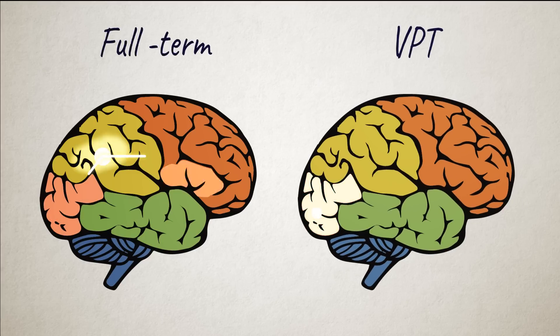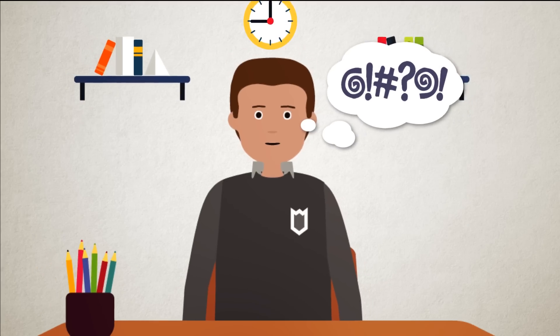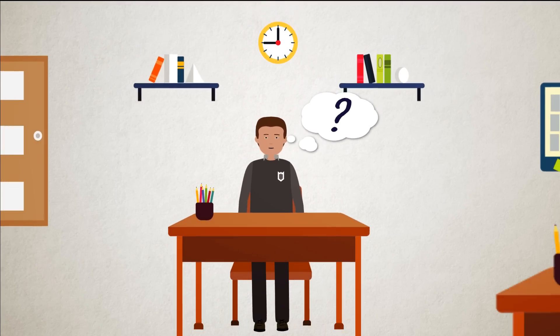However, VPT children's cognitive activation is often reduced and delayed compared to full term children. This means mentalizing networks are underutilized, potentially responsible for impaired theory of mind.